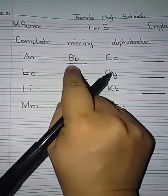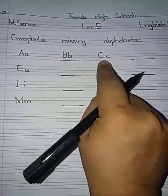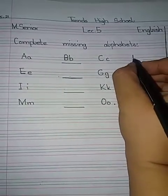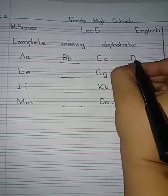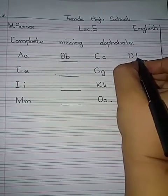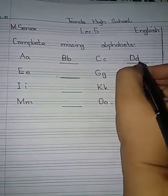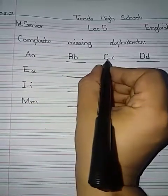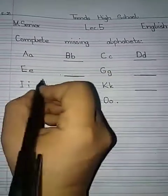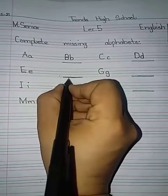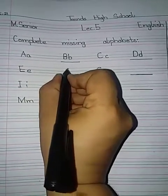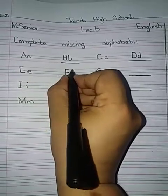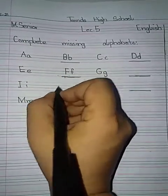A, B, C, D. Now D is missing. D. Capital D then small d. Again: A, B, C, D, E, F. F is missing. Capital F and small f.